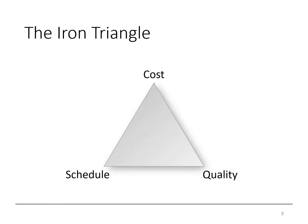In project management, the three criteria which are most often used are cost, schedule, and quality. These are collectively known sometimes as the iron triangle.